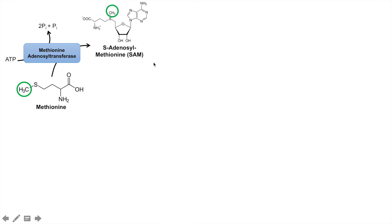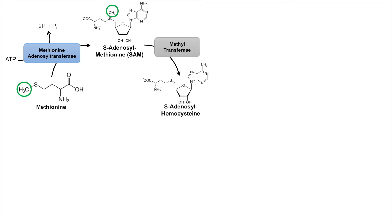SAM is a very important molecule as a methyl donor. It is involved in the synthesis of catecholamines, nucleotides, melatonin, and more. The methyl group in methionine and S-adenosylmethionine are the same. SAM acts as a methyl donor for the synthesis of a variety of things in our body, including catecholamines, nucleotides, creatine, and melatonin. SAM is then acted on by a methyltransferase enzyme, which removes the methyl group and adds it to another molecule.